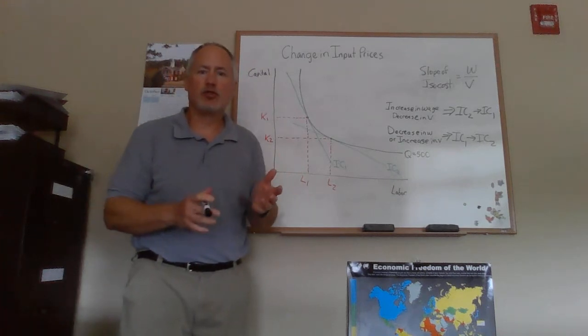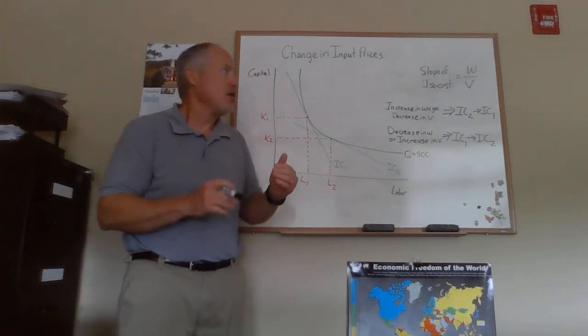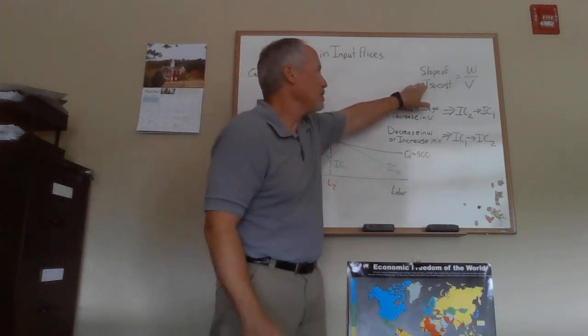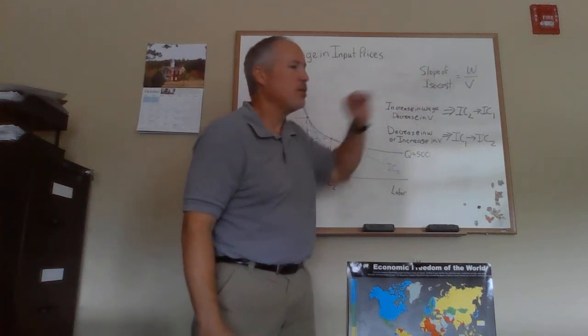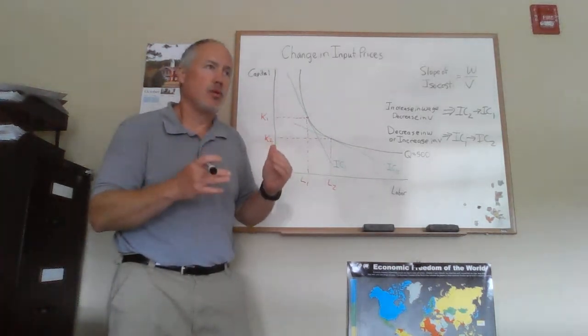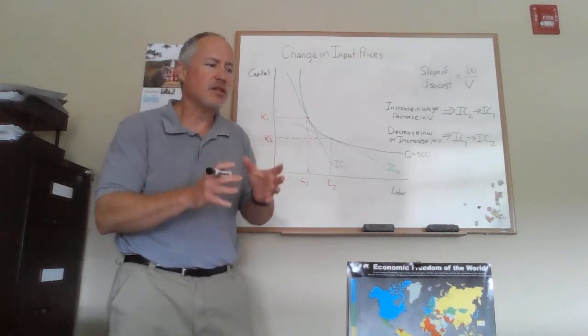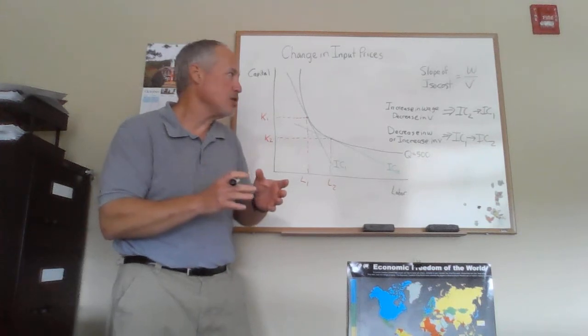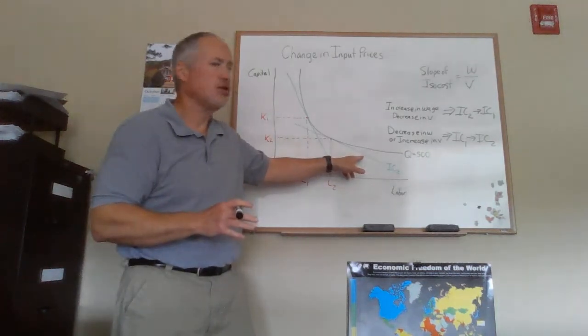And then I have two different isocost lines drawn in there. One's steeper than the other. The slope of the isocost is, well there's a negative sign here, but the slope of the isocost is the ratio of the input prices. So when the prices of one of the inputs change, then it's going to change the slope of the isocost.